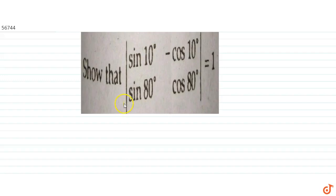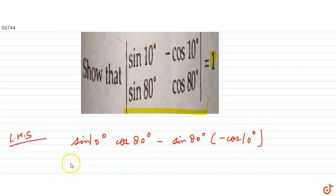In this question we have to show that the value of this determinant is equals to 1. So start with the left hand side. The left hand side, we will get the value for this determinant will be sine 10 degree multiply by cos 80 degree minus sine 80 degree multiply by minus cos 10 degree.